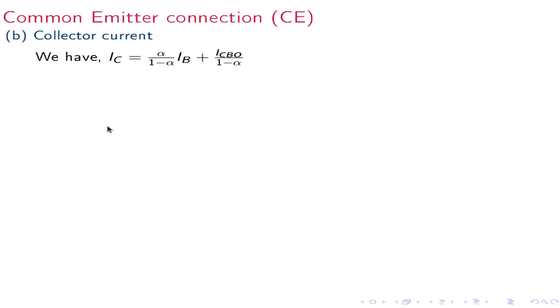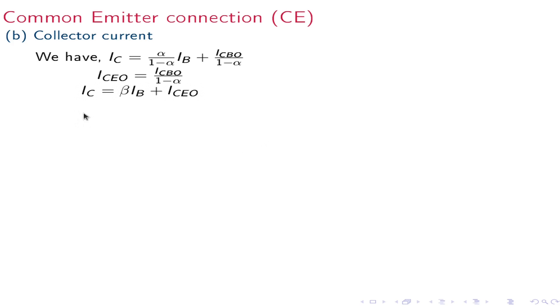For the common emitter collector current, Ic equals (alpha / (1 minus alpha)) Ib plus Icbo / (1 minus alpha). Here, alpha/(1 minus alpha) is beta, and Icbo/(1 minus alpha) is Iceo — the collector-emitter current with base open. Therefore, Ic equals beta Ib plus Iceo.